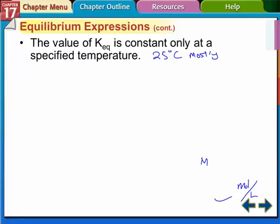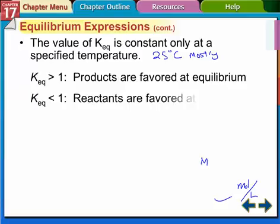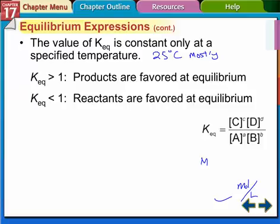Almost all equilibrium constants are at a specific temperature — we'll keep it at 25°C or 298 Kelvin. If the equilibrium constant is greater than 1, the product concentrations on top are greater than the reactant concentrations on the bottom, meaning we have more products at equilibrium. If K-eq is less than 1, the product concentrations are smaller and the reactant concentrations are larger, giving a fraction less than 1 — meaning we have more reactants at equilibrium.